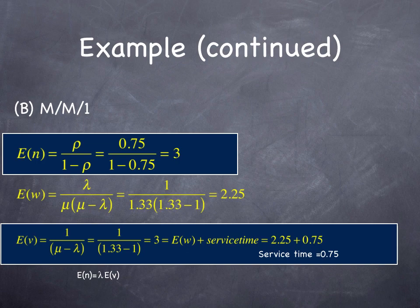Next, we solve it for the M/M/1 process. The equations are a little bit simpler with the M/M/1. Again, the expected number of vehicles in the queue, rho over 1 minus rho, which is 0.75 over 1 minus 0.75, which is 3.